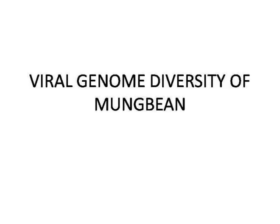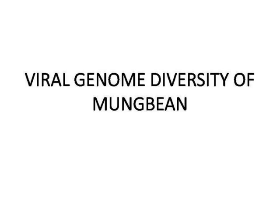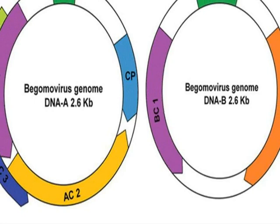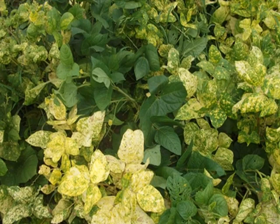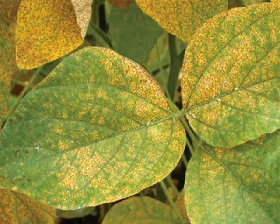Welcome everybody. We are discussing viral genome diversity of mungbean yellow mosaic virus. Mungbean is an important pulse crop grown all over the world. Severe yield losses in mungbean have been caused by destructive viruses. Mungbean, commonly known as moong or green gram, is the subject of this study.